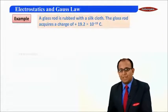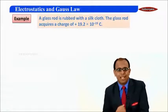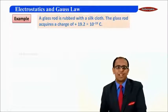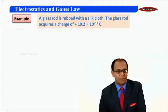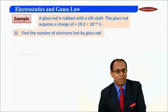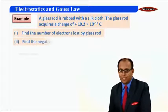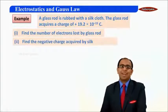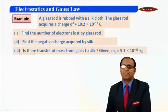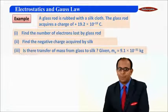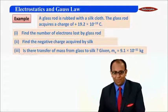A glass rod is rubbed with a silk cloth. The glass rod acquires a charge of plus 19.2 × 10⁻¹⁹ coulomb. You have to find the number of electrons lost by the glass rod, the charge gained by silk, and whether there is a transfer of mass from glass to silk. We are given the mass of the electron.